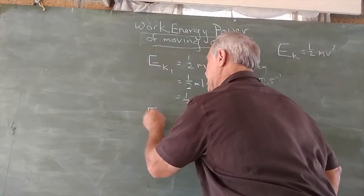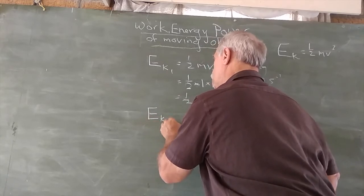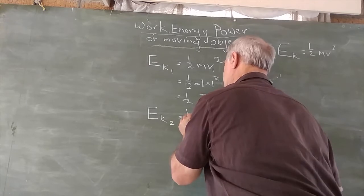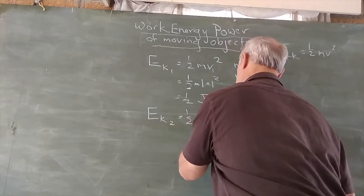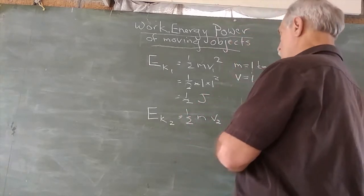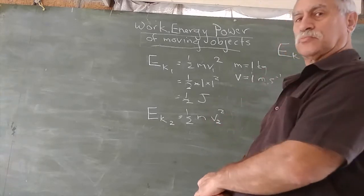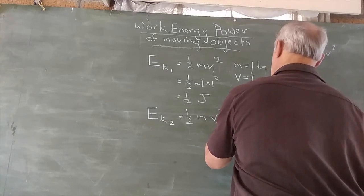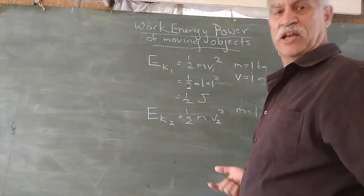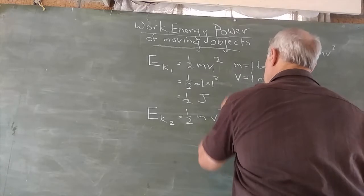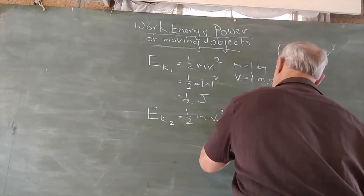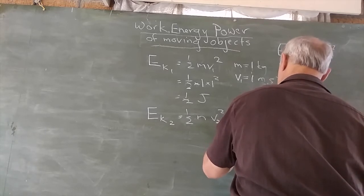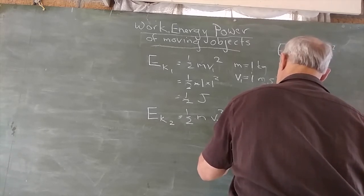Now we have a second case where the same object, E case 2, has the same mass but a different velocity. What are the values here? We know the mass is still 1 because that hasn't changed. But v2 equals 2 times v1, which equals 2 times 1, which equals 2.